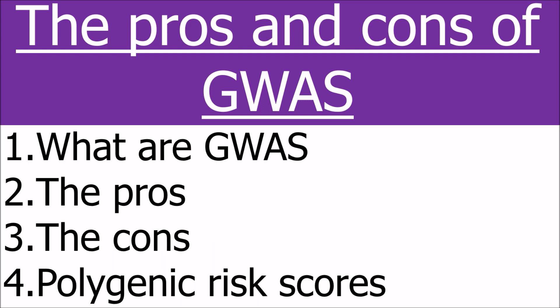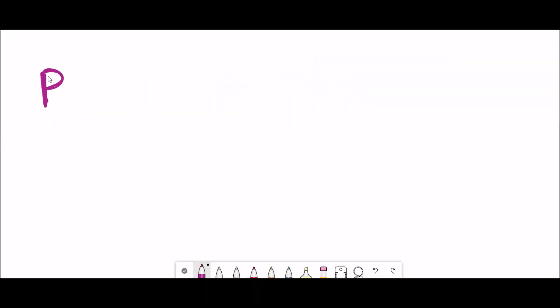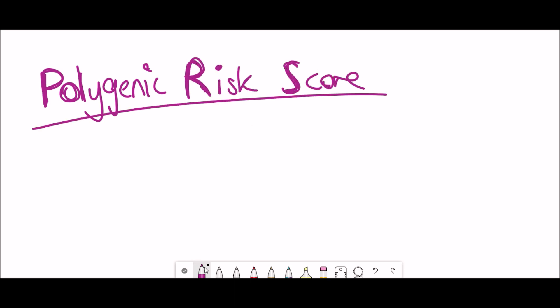If some of these limitations can be addressed, there's great excitement for genome-wide association studies for being used to generate polygenic risk scores. They can take your genetic information and look at which genetic variants you've got and therefore your risk or likelihood of getting a certain disease or phenotype.